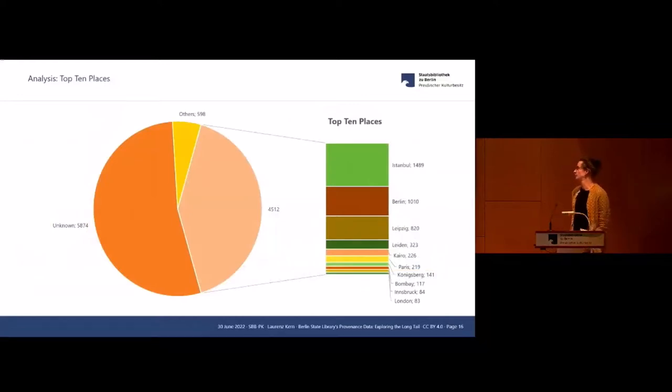Just as an example, what else we could extract from the data. Top 10 places, in this case Istanbul ranks first. I'd say only because of Rescher, it's clear from the data, because we have 1,500 manuscripts or items in total and 1,200 of these items acquired from Rescher. But I think the main idea we can get from this overview is the presence of European places actually, and only Istanbul, Cairo, and Bombay as places connected to the original origin of the items.